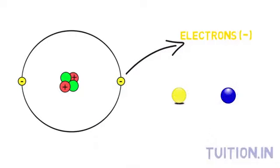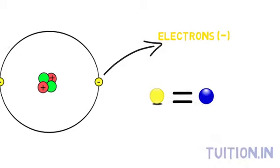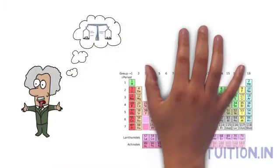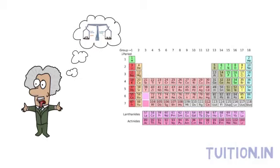Electrons and protons attract each other. Usually, they are equal in number. Scientists ascertain a number to each element based on the number of protons in it.